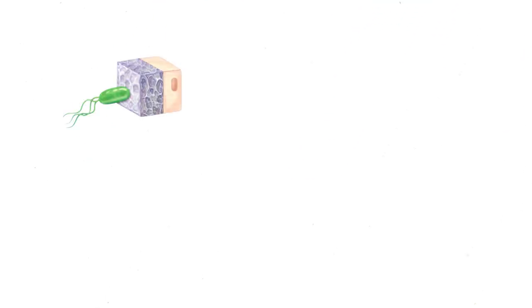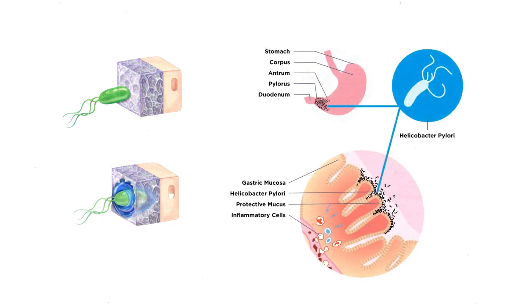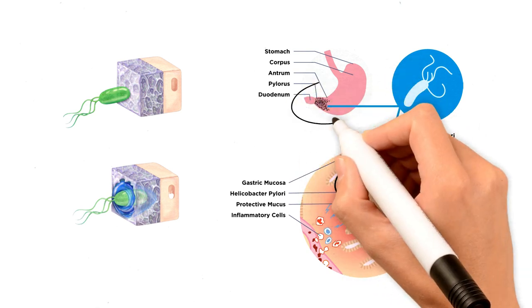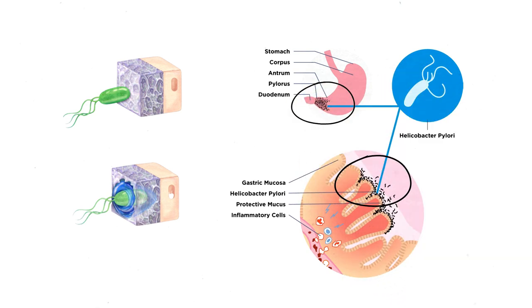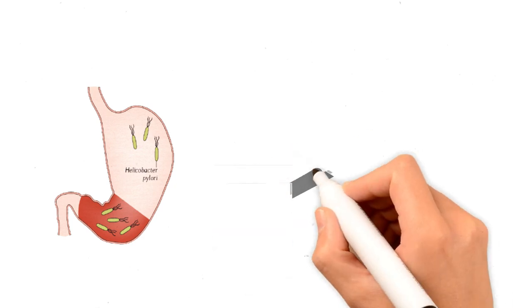H. pylori invades the stomach's mucous layer to reside on the gastric epithelium, usually acquired during childhood. Once present in the stomach, this bacteria passes through the protective mucous layer and settles on the surface of the gastric epithelium. H. pylori usually infects the antrum first, which is the distal part of the stomach.